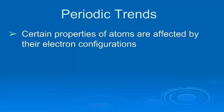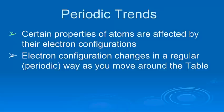So, we're going to take a look at something called periodic trends. To start with, there are certain properties of atoms that are affected by their electron configuration. Because you've learned how to do electron configurations, you know that as you move from atom to atom around the periodic table,